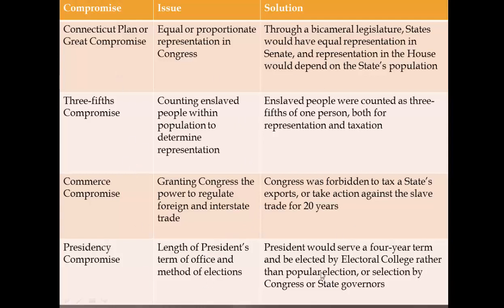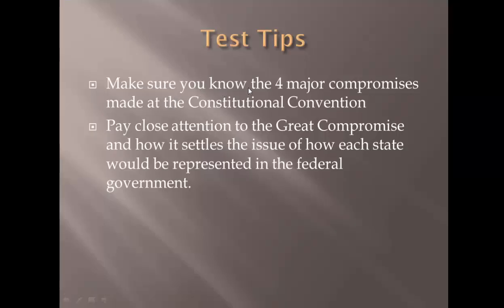There's a nice chart summarizing all of this — the Connecticut or Great Compromise, with representation in Congress as the issue and the bicameral legislature as the solution; the Three-Fifths Compromise; Commerce; and the Presidency. I would study that chart because those compromises are what's going to pop up on exam time. Make sure you know the four major compromises made at this convention, and pay particular attention to the Great Compromise — that's the big one. Good luck, and we'll see you next video.